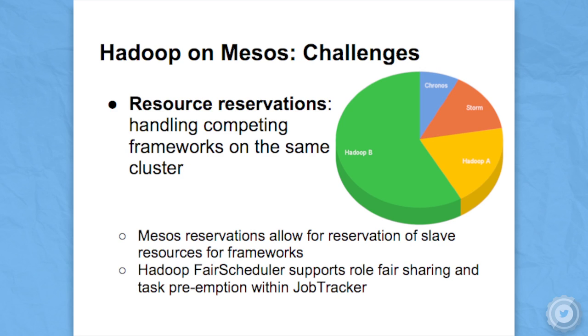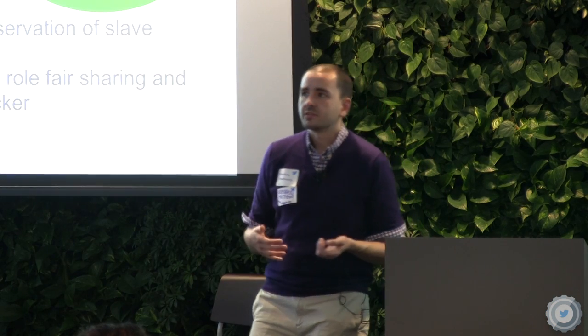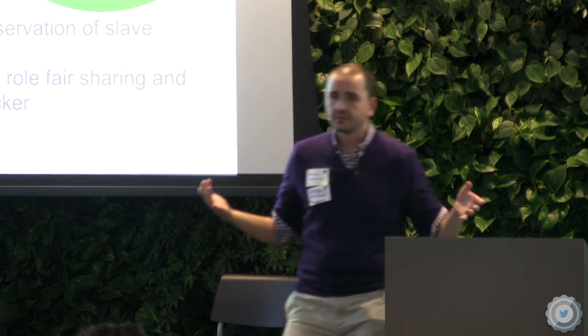Another problem with Hadoop on Mesos is that suppose you have a cluster and you're running more than one framework — say Hadoop, Storm, and Kronos. Hadoop generally will like to take up the entire cluster because it's kind of greedy, and the problem is that you end up with a starvation situation. Mesos, as of very recently, has a feature called reservations that allows you to specify per slave a minimum number of resources to guarantee for a particular framework. For example, you can say Storm will always get two CPUs on every slave. However, if Storm isn't using those CPUs at the time, then Hadoop can use them.